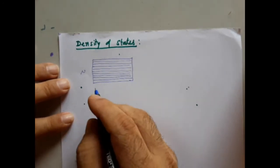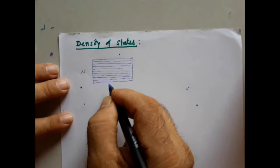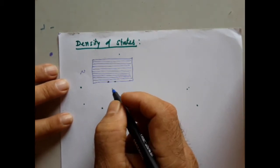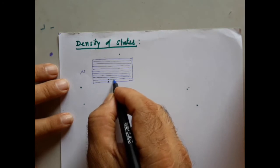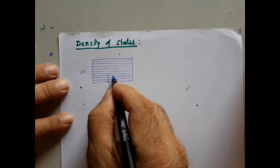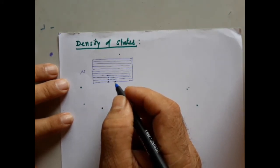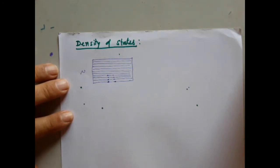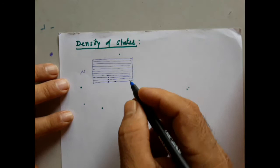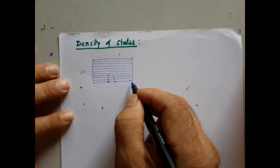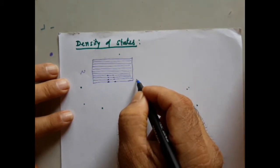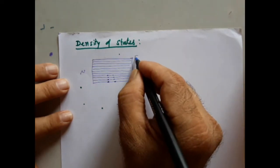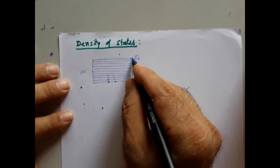According to Pauli's exclusion principle, one energy level can occupy a maximum of two electrons. When atoms are brought closer together, the energy levels split and there is a distribution of energy across a range.